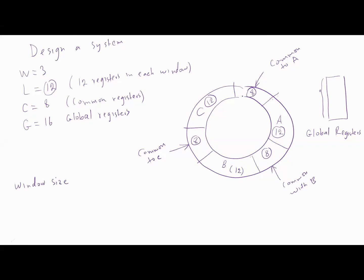The window size equals, for example for A, we have here these 12 registers and here this 8 and here this 8. So 12 plus 8 adjacent to B and 8 adjacent to C plus the 16 global registers which equals 44 registers.